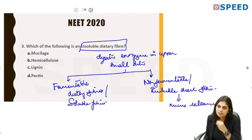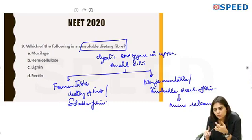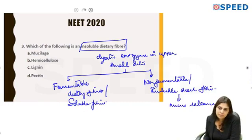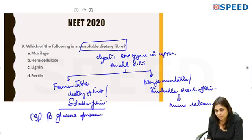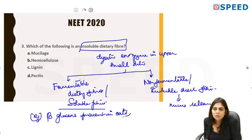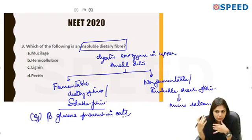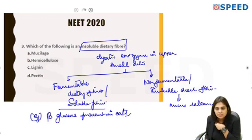So the two types of dietary fibers are: fermentable or soluble dietary fibers, and non-fermentable or insoluble dietary fibers. Examples of soluble fibers: beta glucans, which are present in oats, barley, and mushrooms. You can observe that oats dissolved in water become gooey — that is a soluble fiber property.